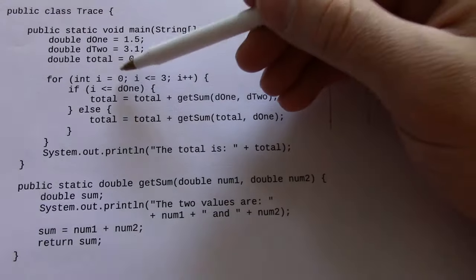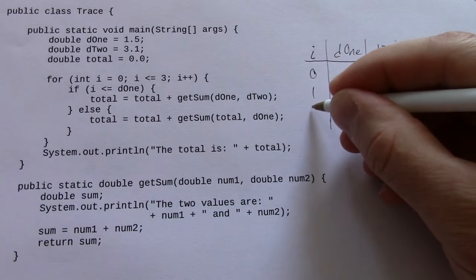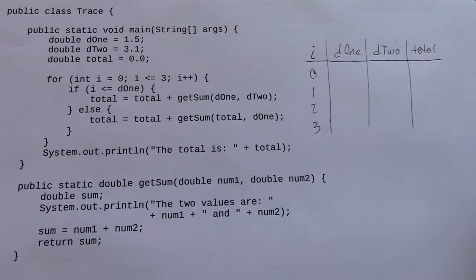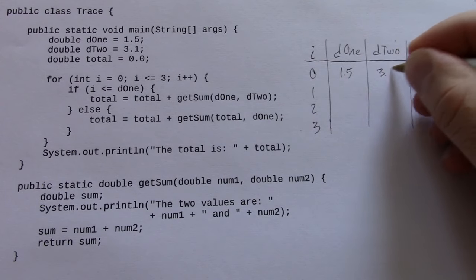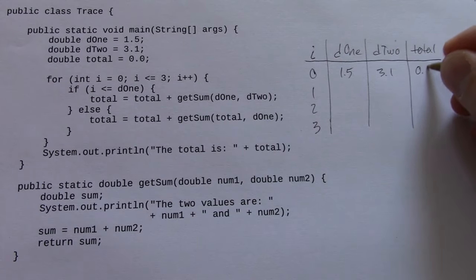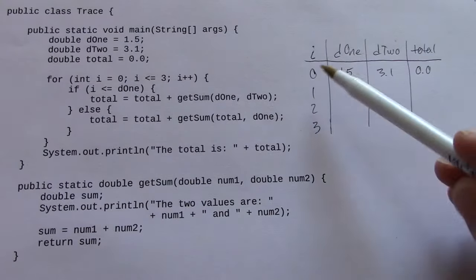So the i variable you can see is going to loop from 0 to the value 3 inclusive. So I'm just going to go ahead and fill in the table like that. d1 starts out as 1.5, d2 starts out as 3.1, total starts out as 0.0. Now again, you want to fill out this table at the beginning of each loop in the for statement, right? So when i equals 0, these are the initial values of the other three variables.